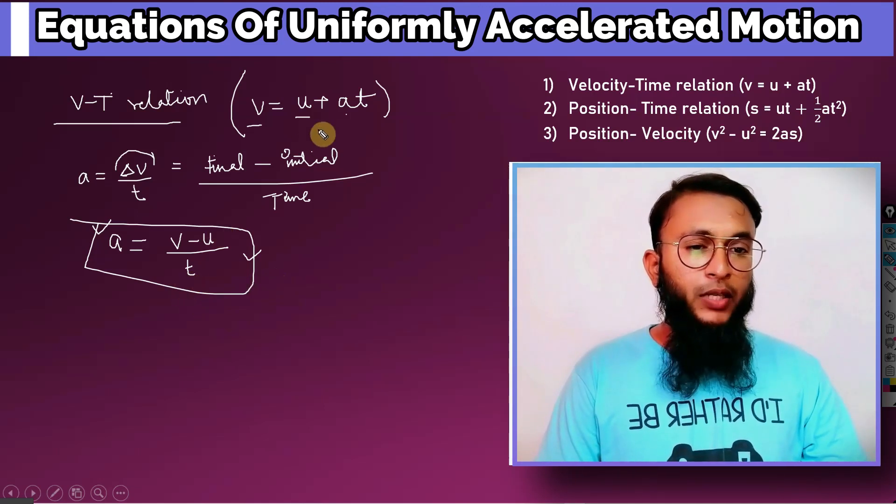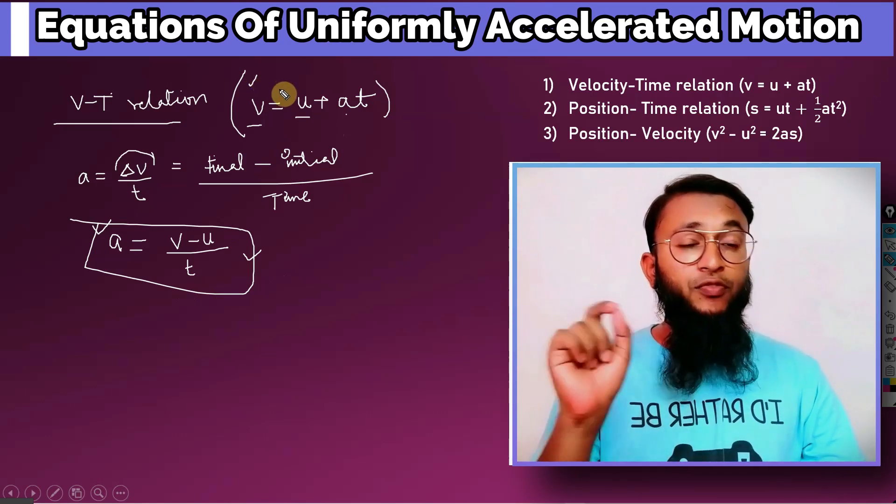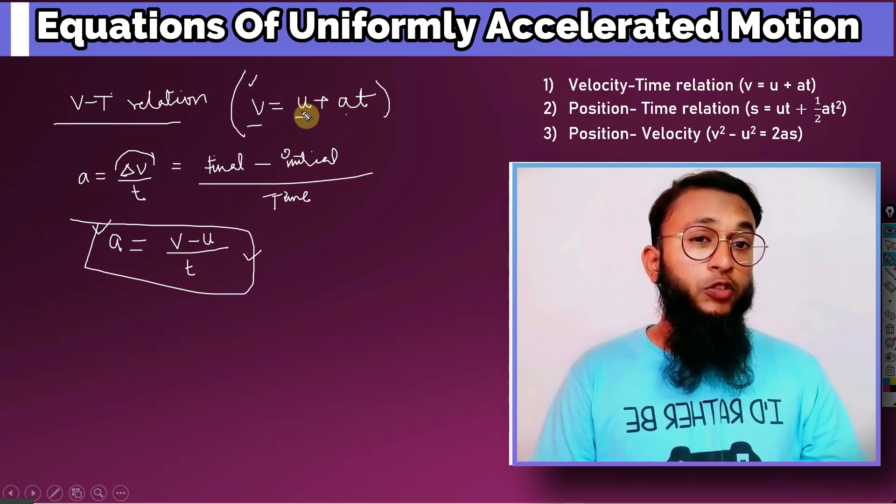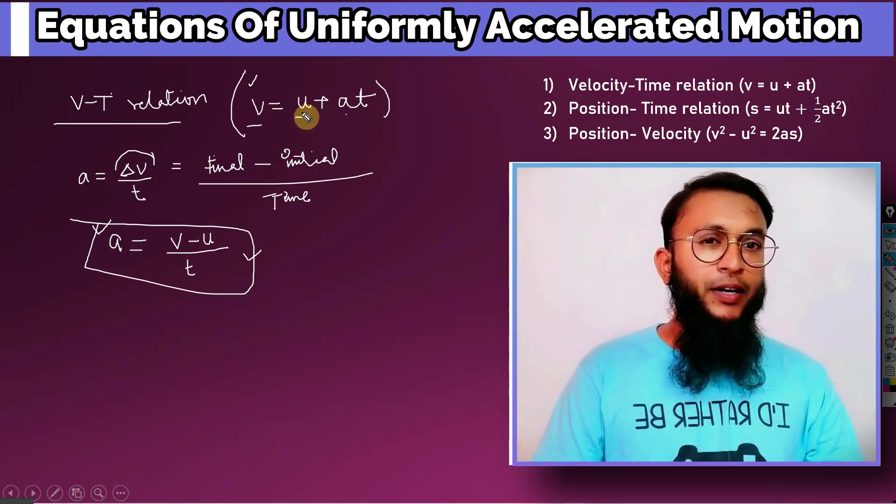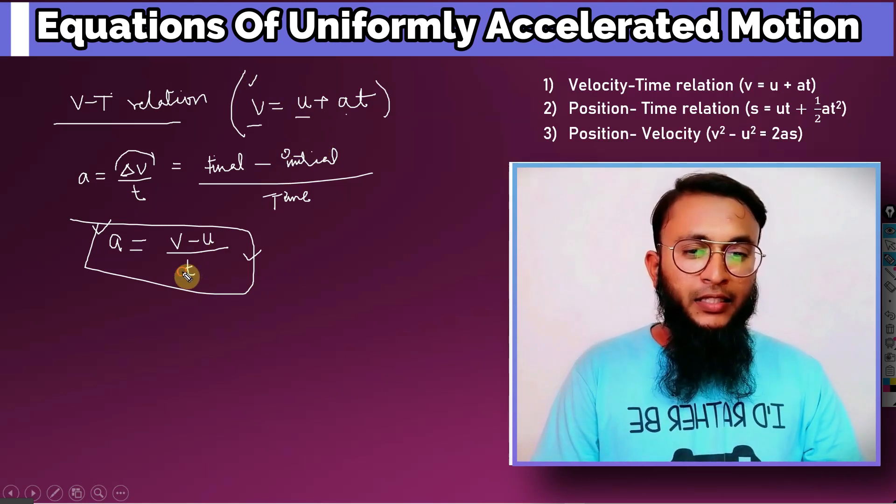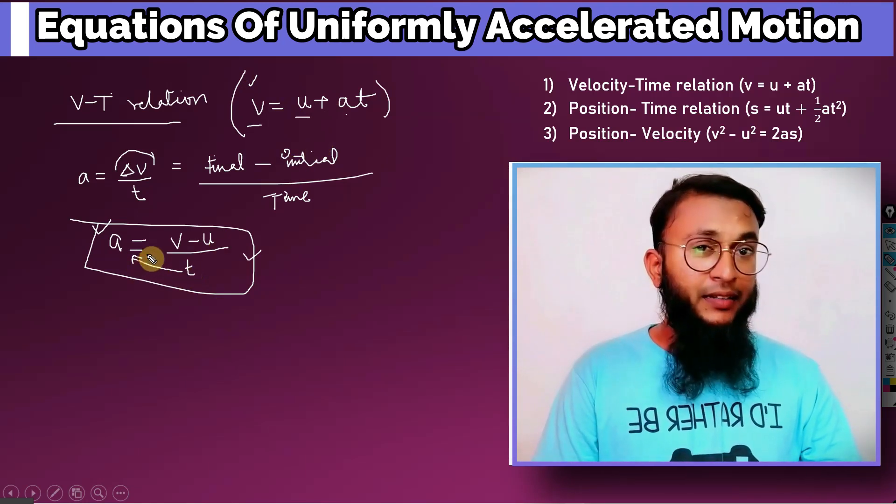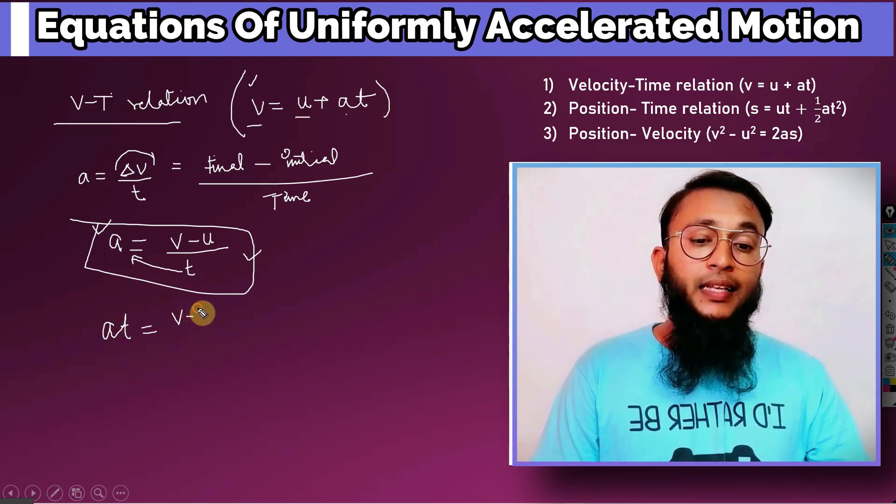We will see what we do now in the formula. We know that v is at the left side of the equation and the other terms are the right side of the equation which is u and at. So what we need to do is t ko cross multiply kar dete: a times t equals v minus u.